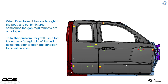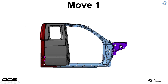As I mentioned, when these door assemblies are brought to the fixtures they're going to measure the gap, and if the gap is out of spec they're going to use what's known as a margin blade or a gap setting tool. It's just going to go in there and pick up off of each gap feature on each door and adjust it to get those gap measurements within spec.